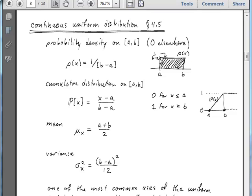So obviously, the height of the rectangle has to be 1 over B minus A. And that really defines our continuous uniform distribution. So it has a probability density that is 1 over B minus A for all X in the interval between A and B. And for all X that are outside that interval, it is going to take the values of 0.